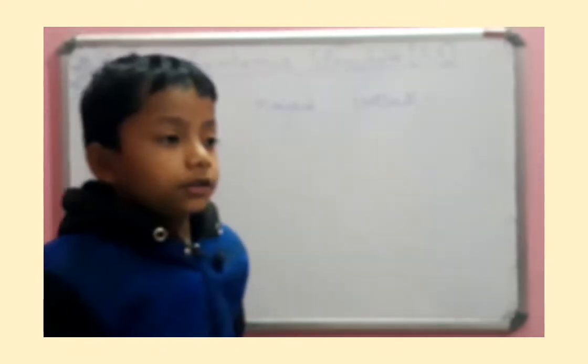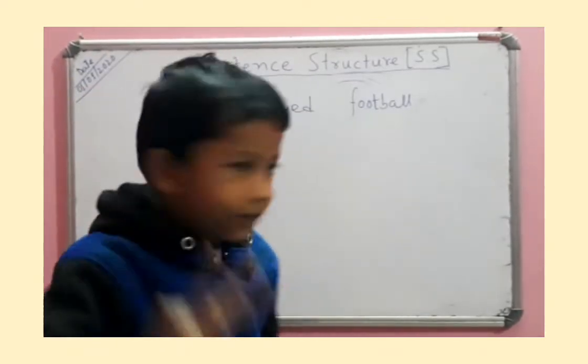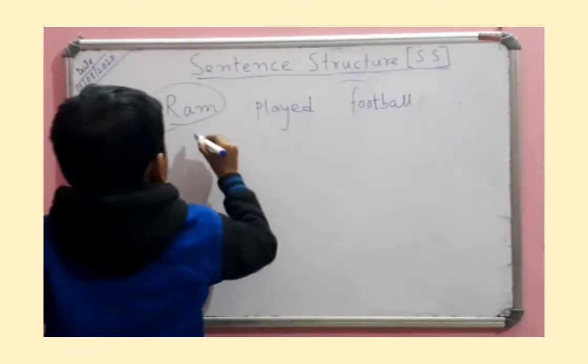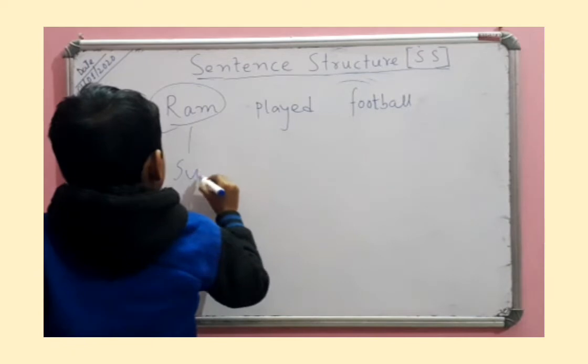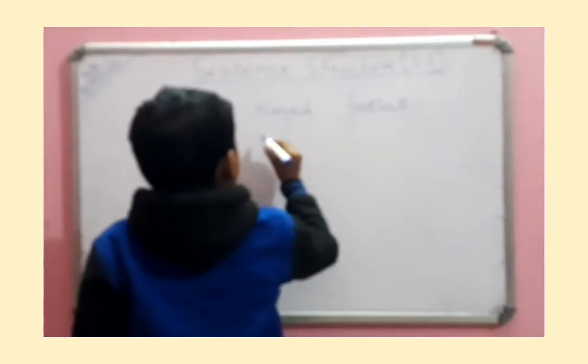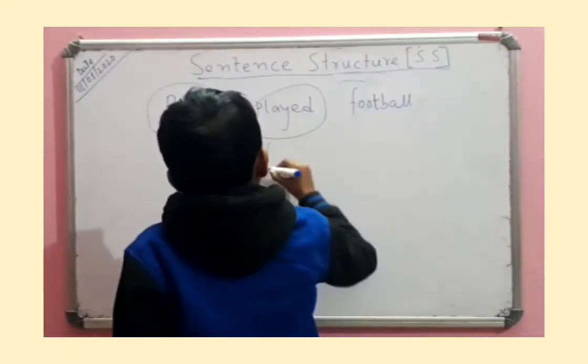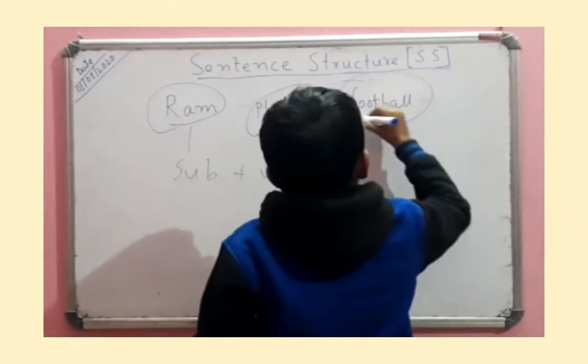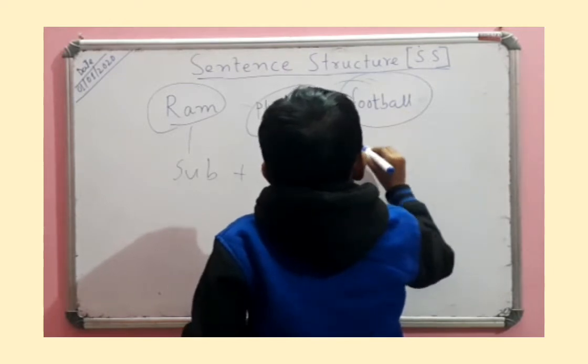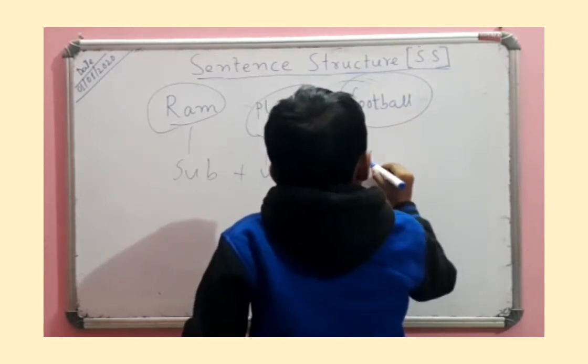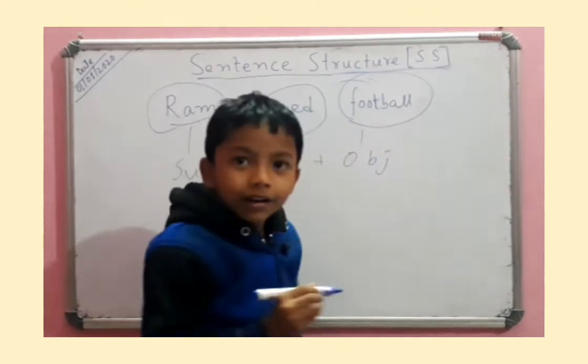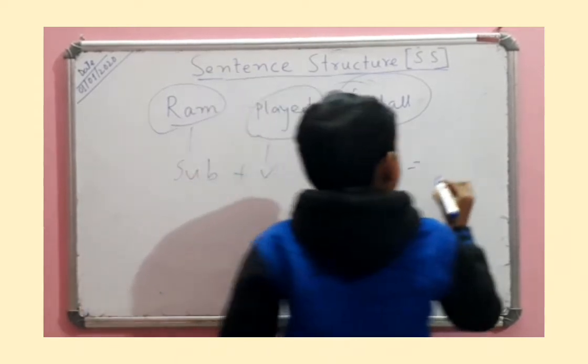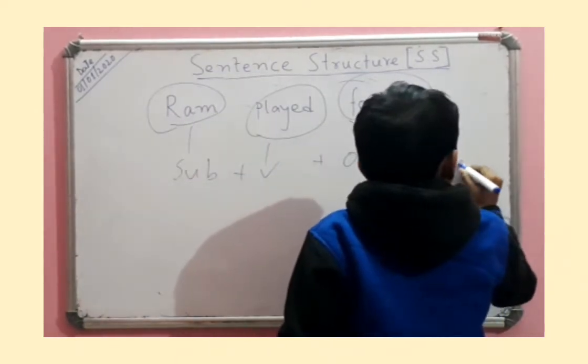Okay, example two. Let's get started. So 'Ram' is a subject, right? And 'played' is a verb, and 'football' is an object. It's an object, right? So it equals to—can you guess? You know? Okay, so SS2.